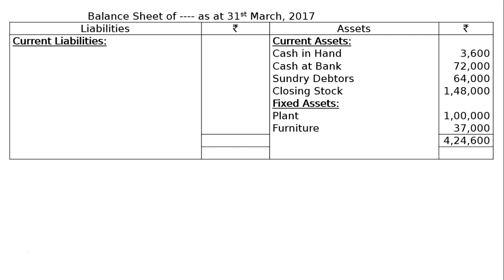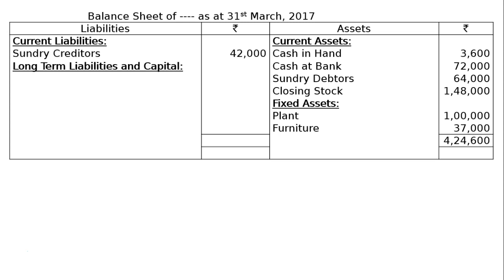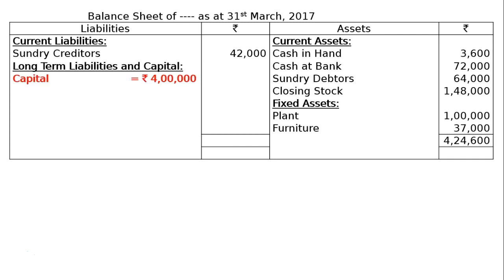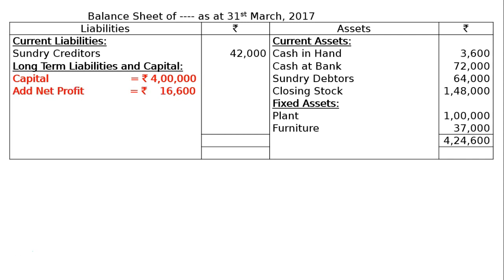Now coming down to the liability side, under current liabilities the first entry is sundry creditors at rupees 42,000. Next under long-term liabilities and capital, we have capital at rupees 4,00,000, and then add net profit of rupees 16,600.